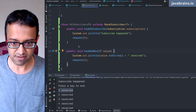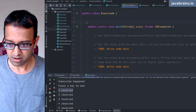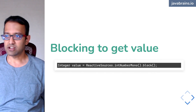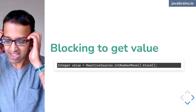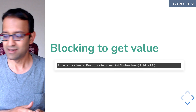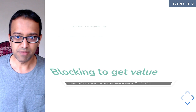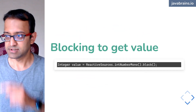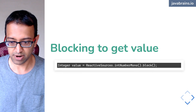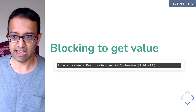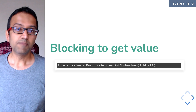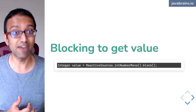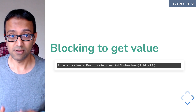I think we did exercise five. We completed exercise five. We looked at blocking for the mono. The problem with blocking is that it may not return a value. We looked at how there are three possible events that are emitted: you get an event, you get a completion, and you get an error.